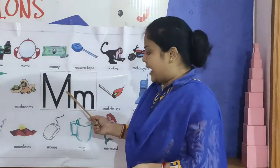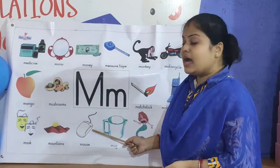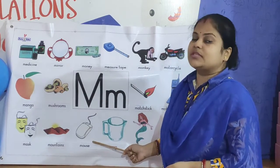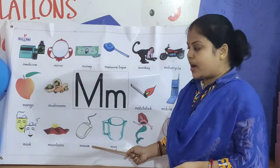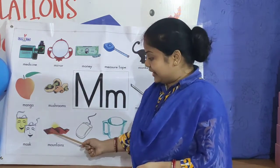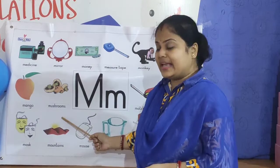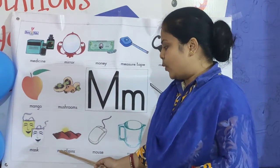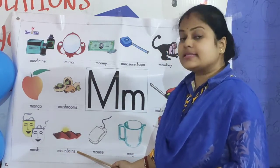And M for mouse — it is a mouse that is connected to a computer. What is the spelling of mouse? M-O-U-S-E. Mouse. And M for mountains. Look children, it is looking so beautiful — there are mountains and the sun is rising. What is the spelling of mountain? M-O-U-N-T-A-I-N-S. Mountains.